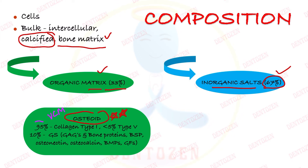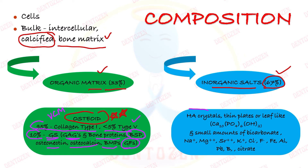The organic matrix is 95% collagen type 1 and less than 5% type 5 collagen. Ten percent of it is ground substance — glycosaminoglycans and bone proteins like bone sialoprotein, osteonectin, osteocalcin, bone morphogenic proteins, and growth factors. The inorganic component, like other mineralized tissues, is made up of hydroxyapatite crystals which are thin plate-like or leaf-like crystals, along with small amounts of other ions.